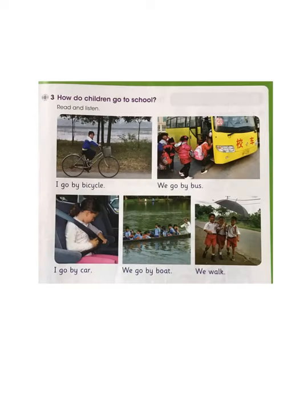Page number 13, Learner's Book. In this page, we learn how children go to school. Many children go by bicycle. Many children go by bus. Some children go to school by car, and some children walk to school. And you know what? Some people even go to school by boat.